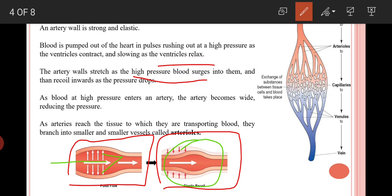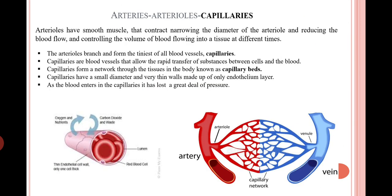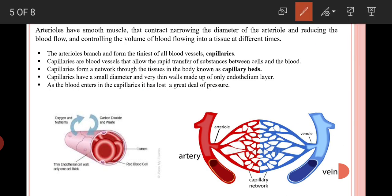As arteries reach the tissues or cells to which they need to transport blood, they branch into smaller vessels known as arterioles, and then into capillaries where gas exchange occurs between tissue cells and the blood. The arterioles have smooth muscle that contracts, narrowing their diameter and reducing blood pressure. The arterioles then branch further into the tiniest blood vessels, known as capillaries.